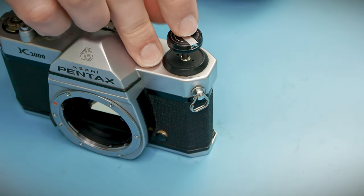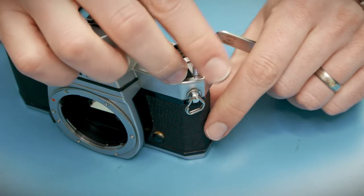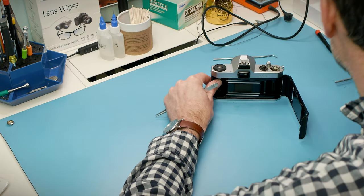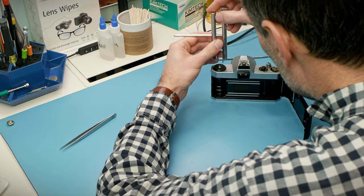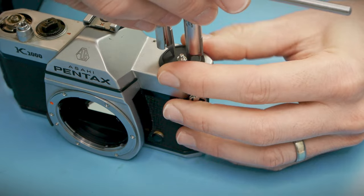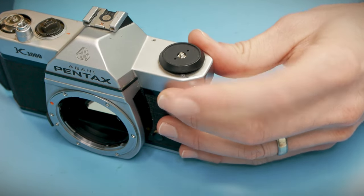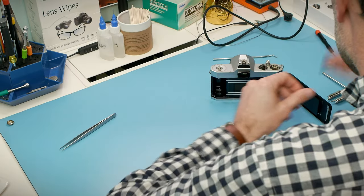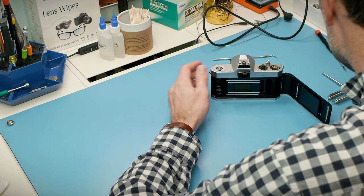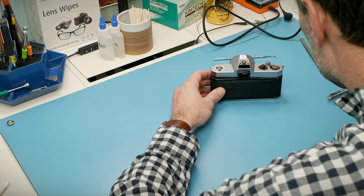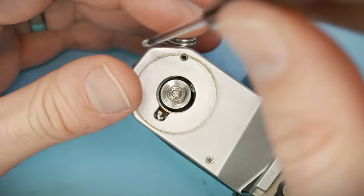The rewind knob is screwed on top of the rewind fork, so I'll use a thin sturdy tool and hold the fork in place and spin off the knob. The retaining plate underneath requires the spanner again. This is just a regular thread. And I can't forget that guy. And get the three retaining screws and the top cover is ready to slide off.